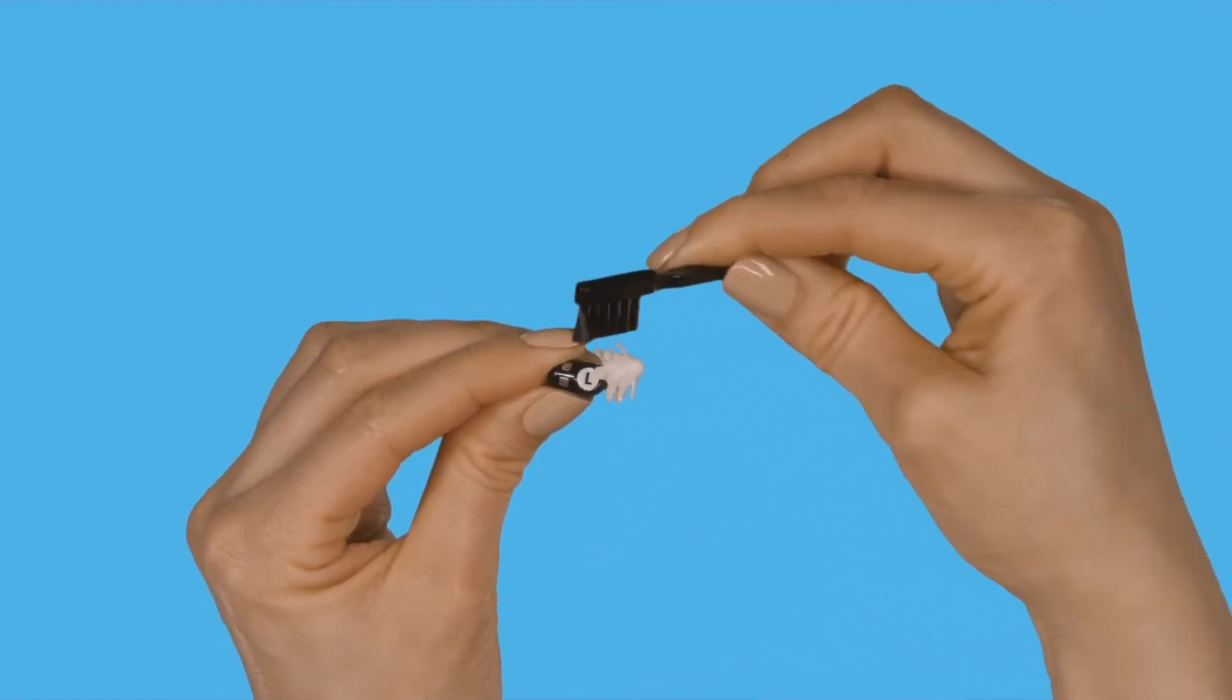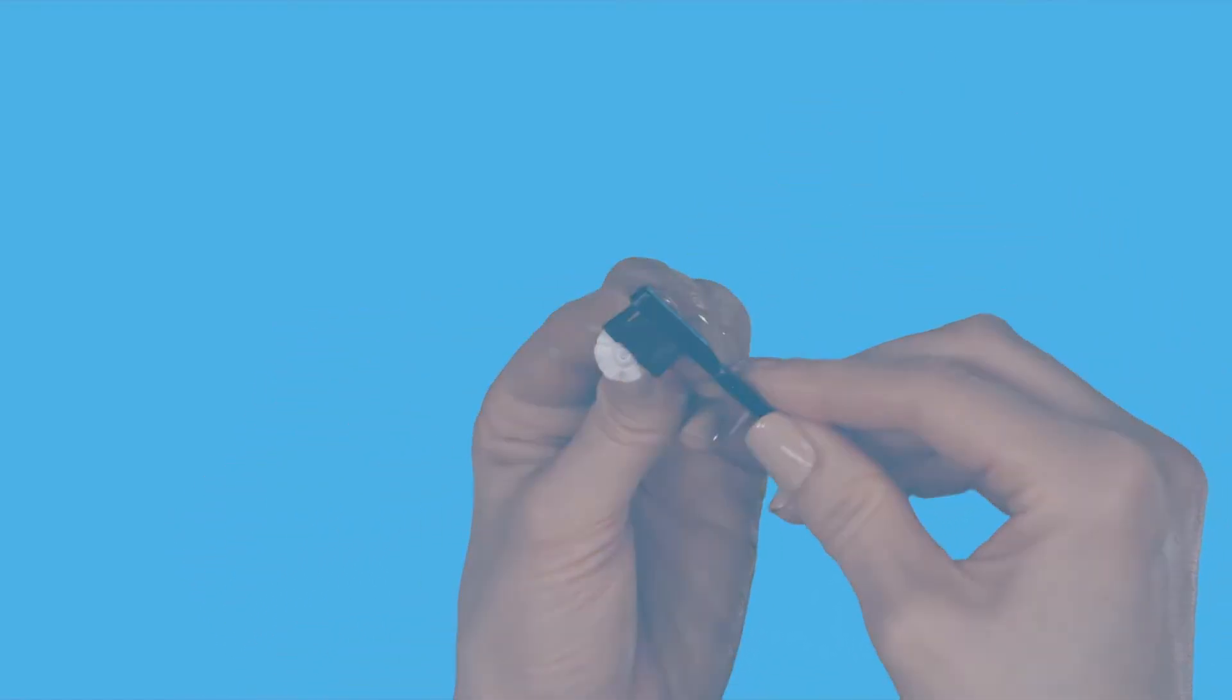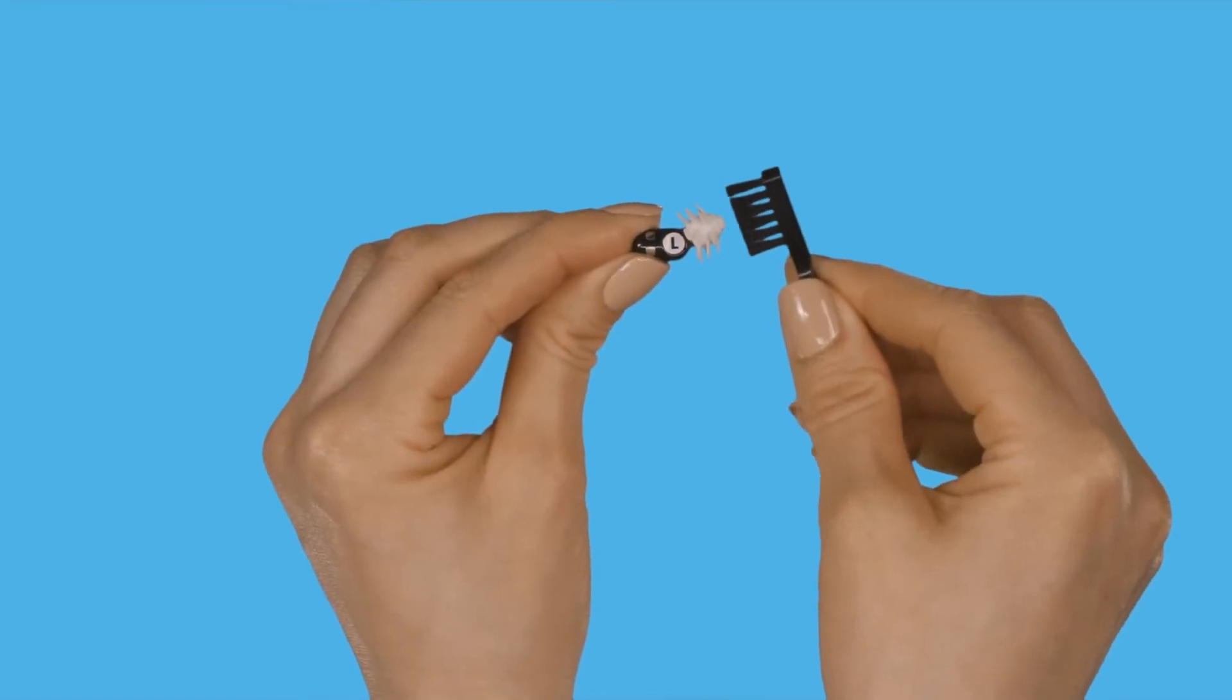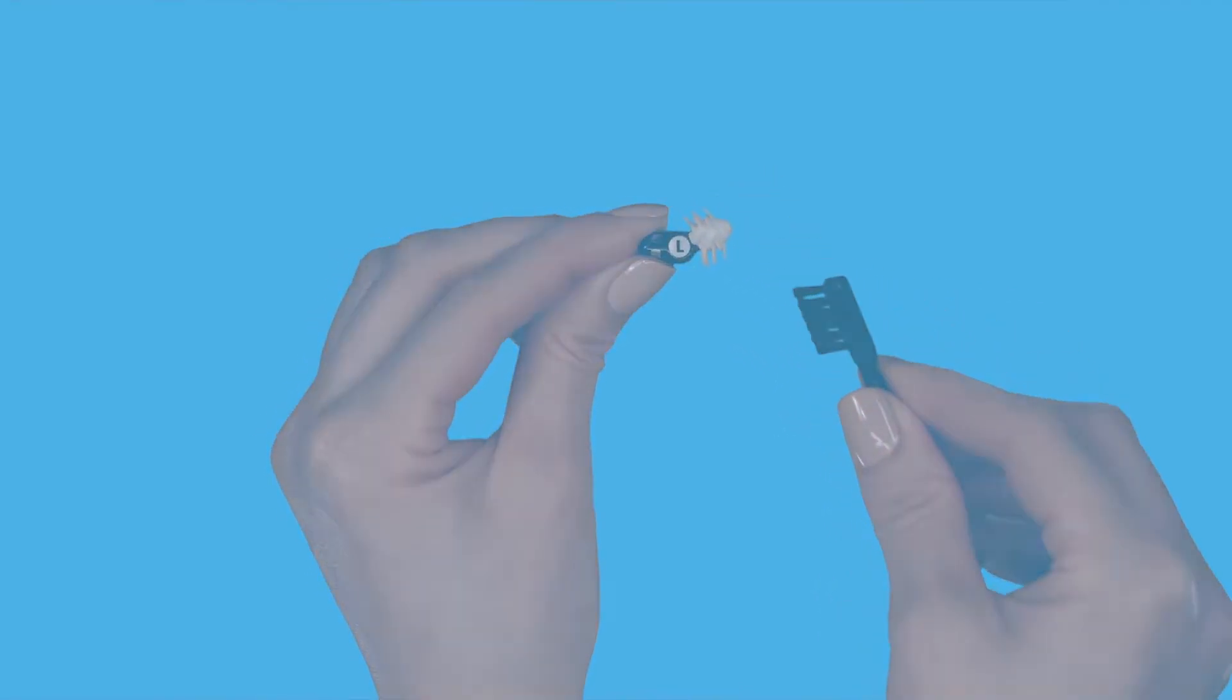If you notice wax or other debris on your flexis, simply let them dry and gently clean them with the cleaning brush provided in the Eargo box.